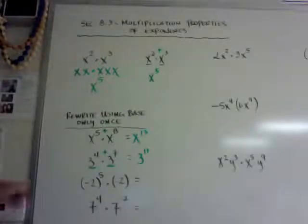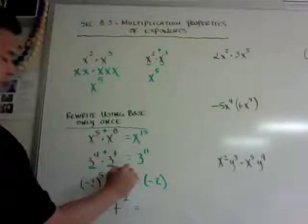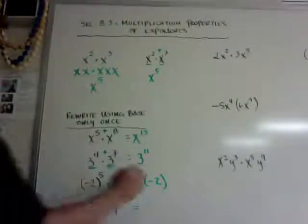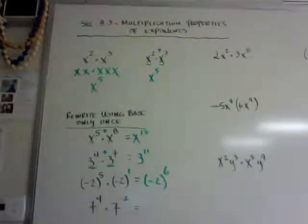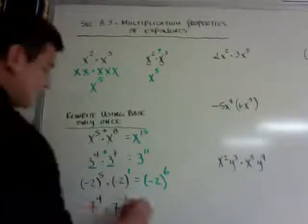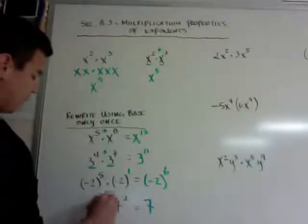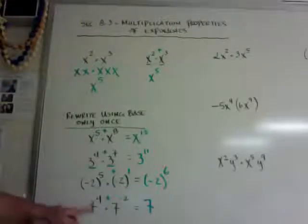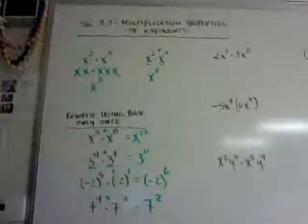If I have negative 2 with an invisible exponent of 1, when I add them together I get exponent 6. Make sure you leave the parentheses if the problem gives parentheses. For 7 to the 4th times 7 to the negative 2: 4 plus negative 2 is like 4 minus 2, so that's 7 to the second power.